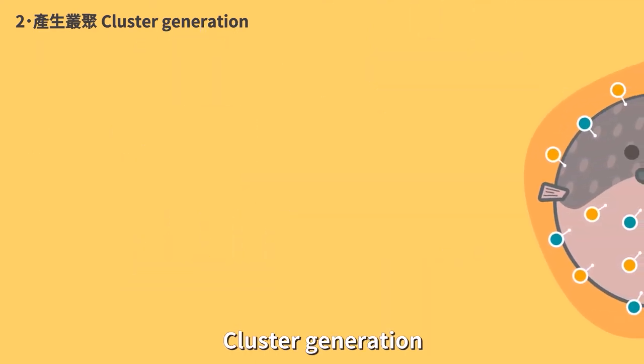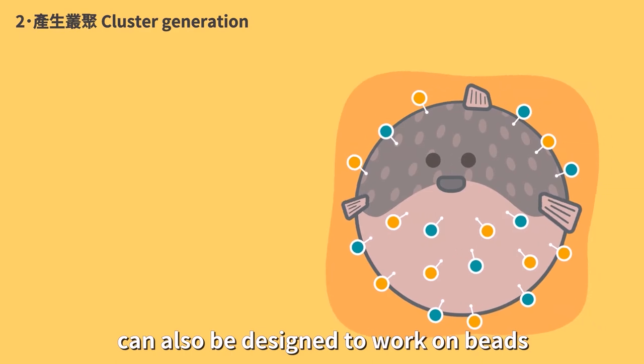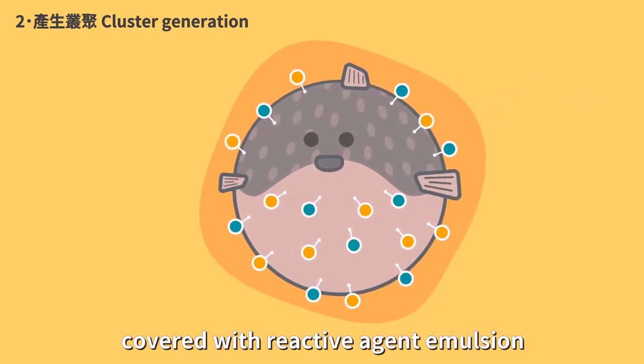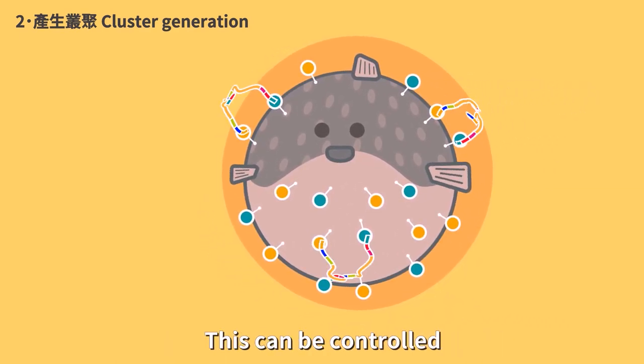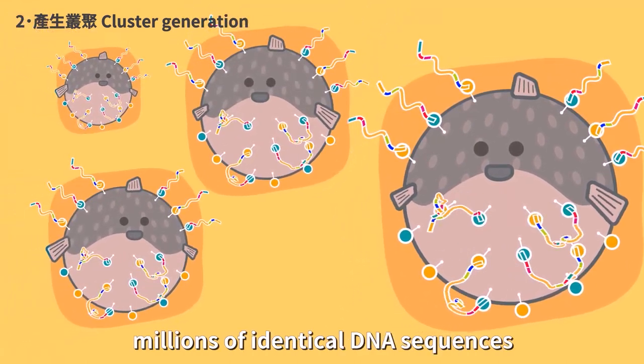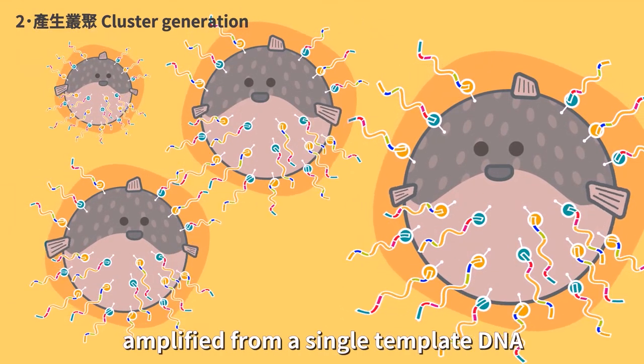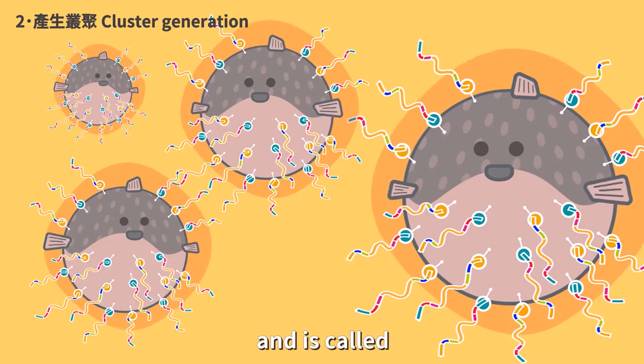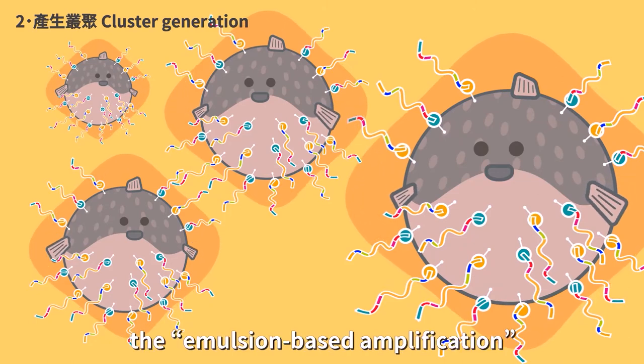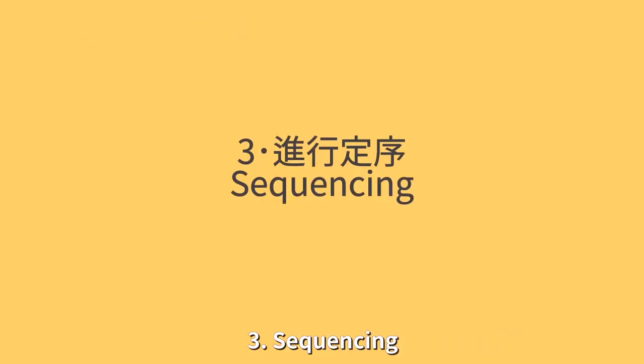Cluster generation can also be designed to work on beads covered with reactive agent emulsion. This can be controlled so that each bead would have millions of identical DNA sequences, amplified from a single template DNA, and is called emulsion-based amplification.